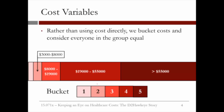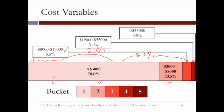The buckets were partitioned so that 20% of all costs is in bucket 5, 20% in bucket 4, and so forth. The partitions were: $0 to $3,000; $3,000 to $8,000; $8,000 to $19,000; $19,000 to $55,000; and above $55,000. Notably, 78% of patients had costs below $3,000, placing them in bucket 1, even though each bucket represents an equal 20% share of total costs.